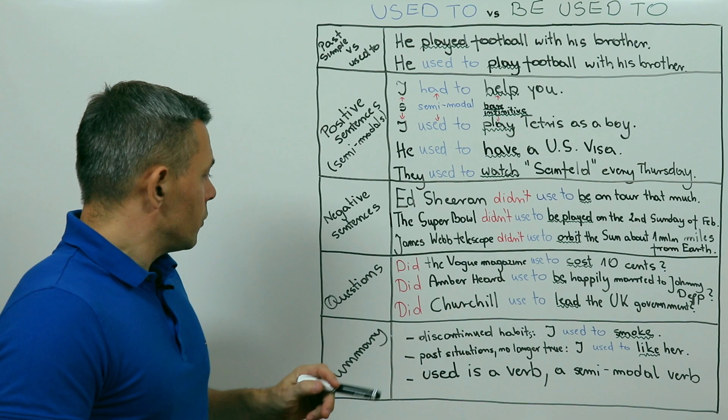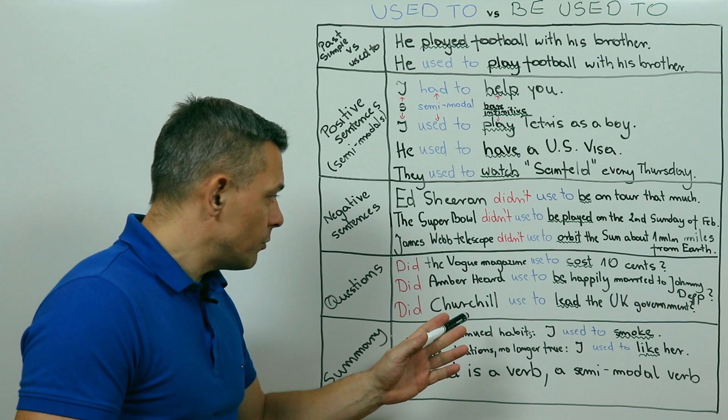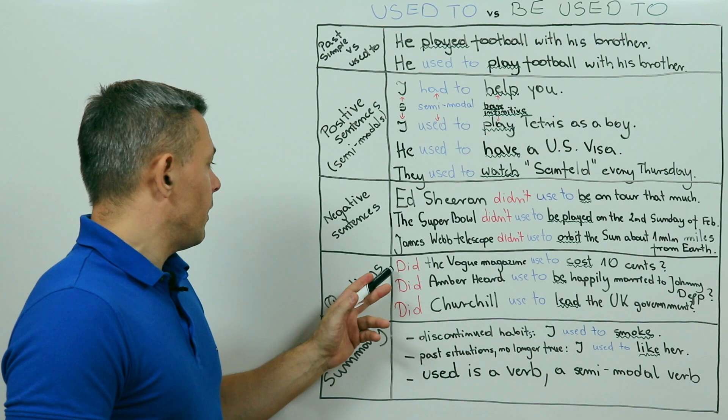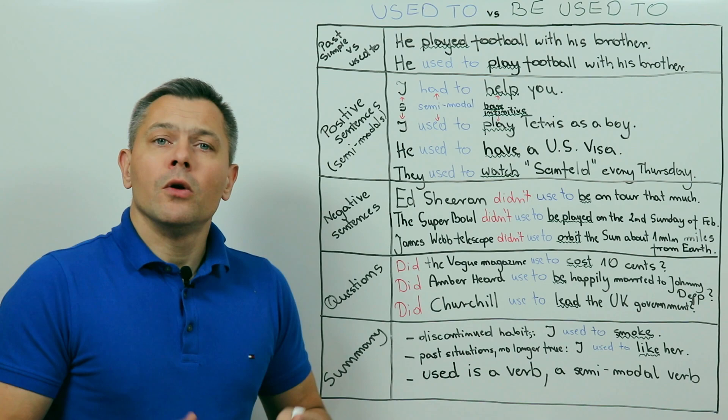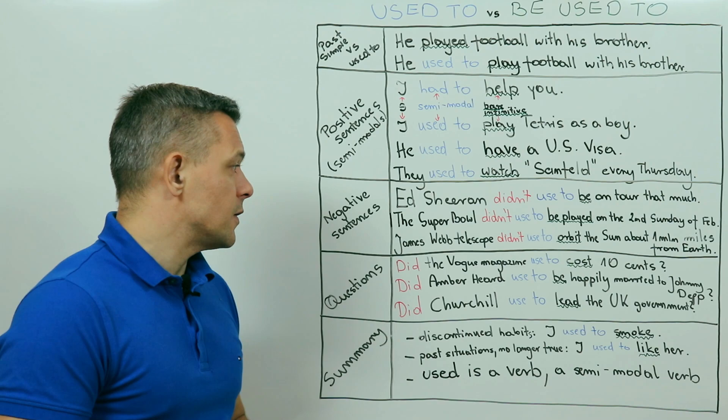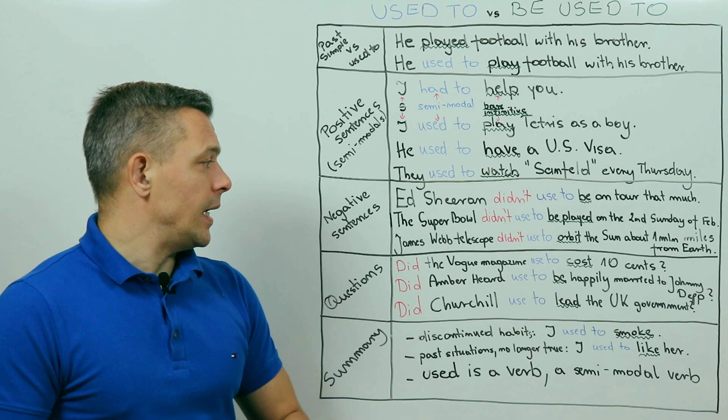Let's now move on to questions where we need did before the subject, then the subject, then again used to, with no D, and again another verb in its bare infinitive form. Like in this sentence, for example. Did the Vogue magazine use to cost 10 cents? Well, with today's prices it's hard to believe it, but it really did. Today the price is much higher, mostly because it's been over a century since the magazine's first issue, so it is no longer true that the Vogue magazine costs 10 cents. But it used.